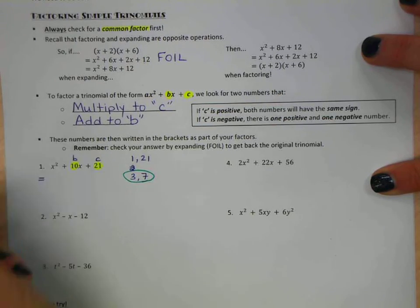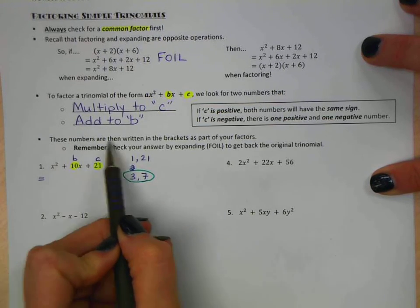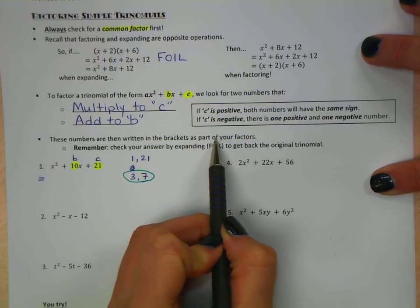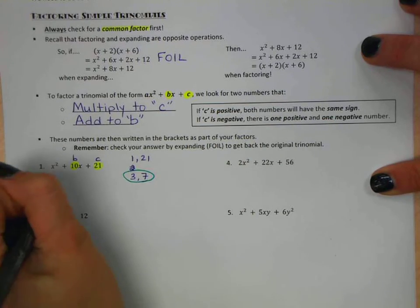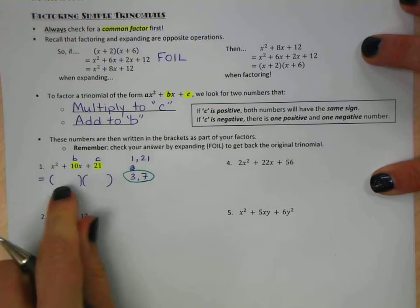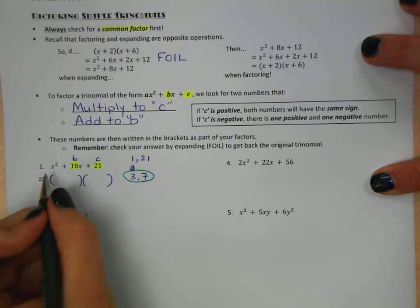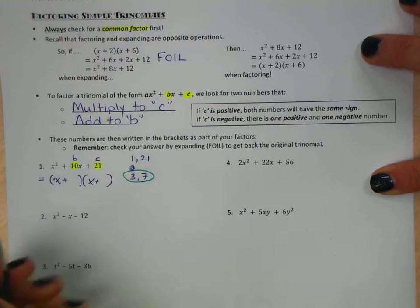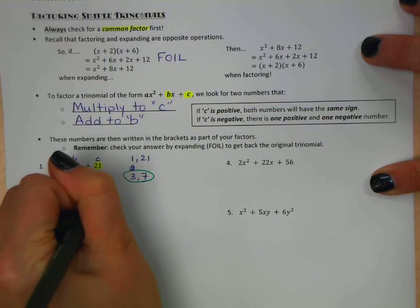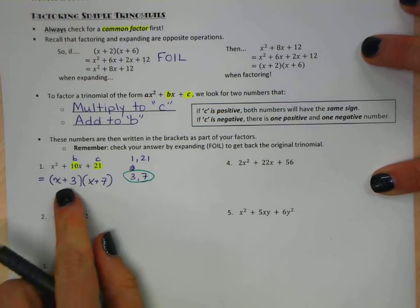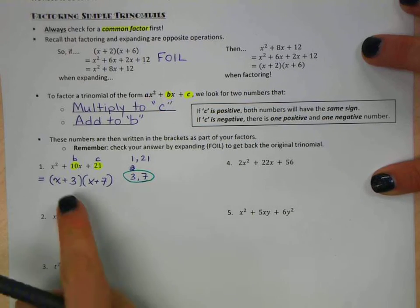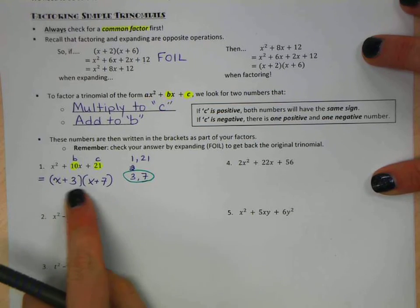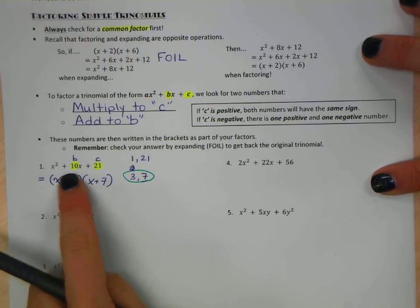So our next line, we write these numbers in the brackets as part of your factors. So we know that we're going to have two factors, two binomials that add together. Our variable is x. And then we have 3 and 7. So positive 3 and positive 7. There are our two binomials that multiply together to give us this trinomial.